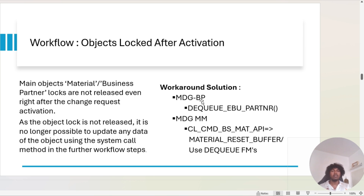The next issue is workflow objects remaining locked even after activation. Normally, once a CR is activated, objects like the material ID and business partner are released automatically. But in our case that didn't happen. After the activation step, we called a system call method to update satellite data in the material master, but the material master was already locked — even after the standard programs ran activation.